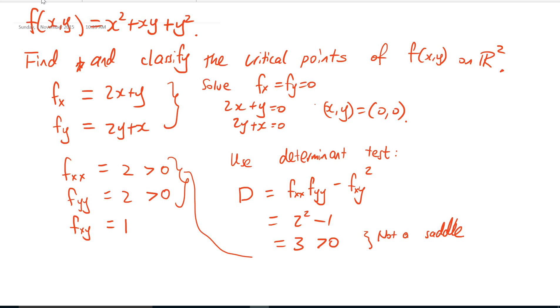We can determine that the function f at (0,0) is a local minimum because the second derivative is positive.